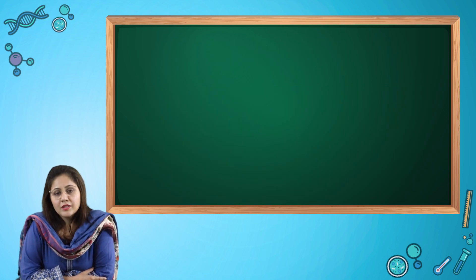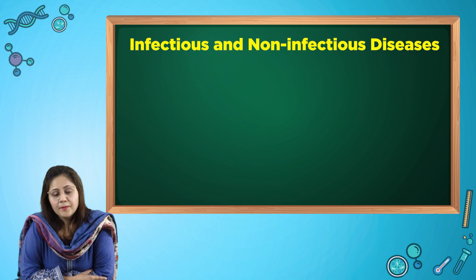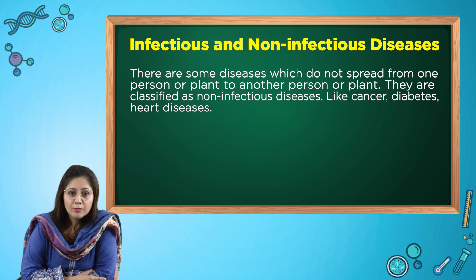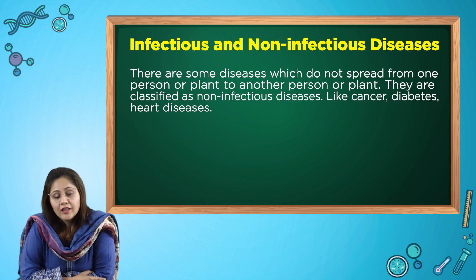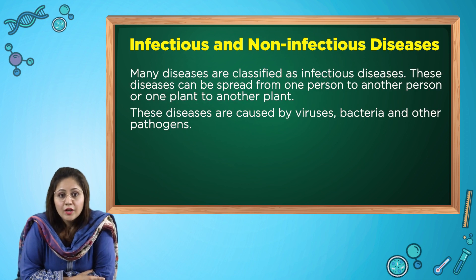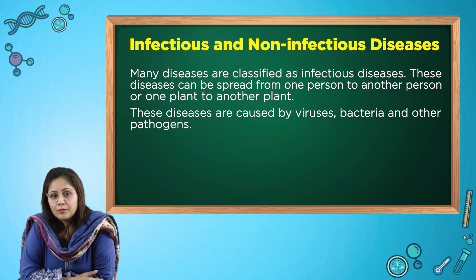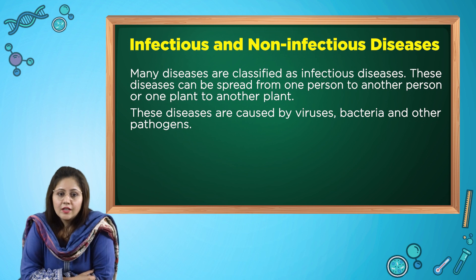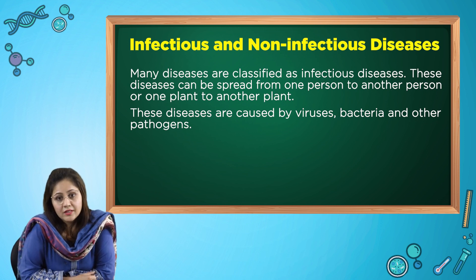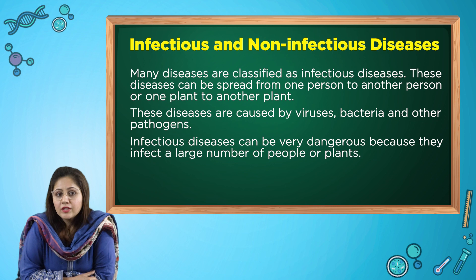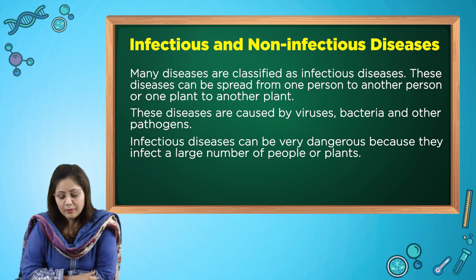Now let's talk about infectious and non-infectious diseases. There are some diseases which do not spread from one person to another person, or one plant to another plant. These are classified as non-infectious diseases, like cancer, diabetes, or heart diseases. But there are many diseases which can spread from one person to another or one plant to another — these are called infectious diseases. These diseases are caused by viruses, bacteria, and many other pathogens. Infectious diseases can be very dangerous because they infect a large number of people or plants.